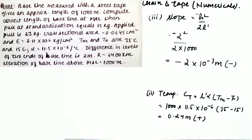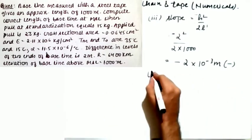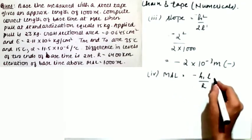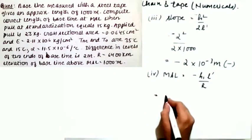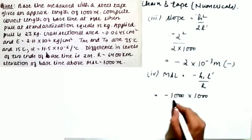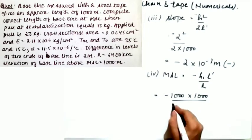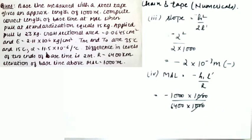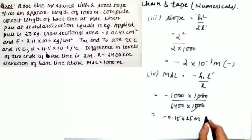The last correction is the mean sea level correction. The formula is −H1 × L' / R. H1 = 1000 meters, L' = 1000 meters, R = 6400 km = 6,400,000 meters. So: −(1000 × 1000) / 6,400,000. This turns out to be −0.15625 meters. This correction is negative — do not forget the sign. It is also very important and cannot be ignored.